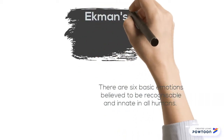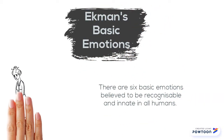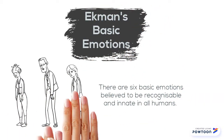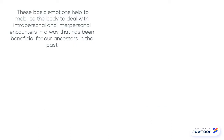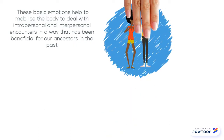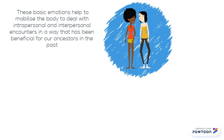One of the more popular evolutionary theories of emotion is Ekman's Basic Emotions. This theory posits that there are six basic emotions which are recognisable and innate in all humans. Ekman believed that these basic emotions help to mobilise the body to deal with interpersonal and intrapersonal encounters in a way that has been beneficial for our ancestors in the past.